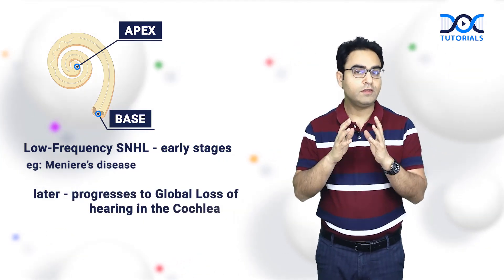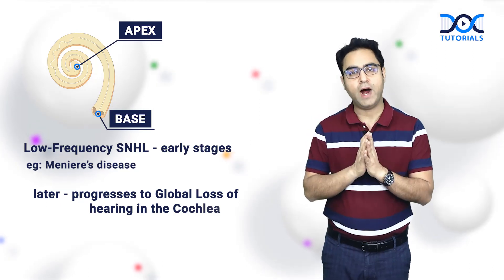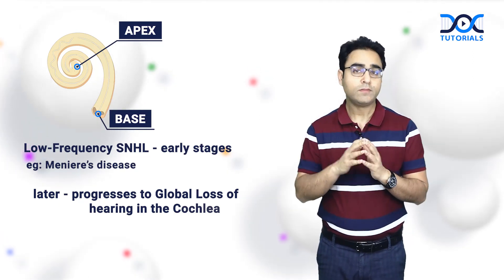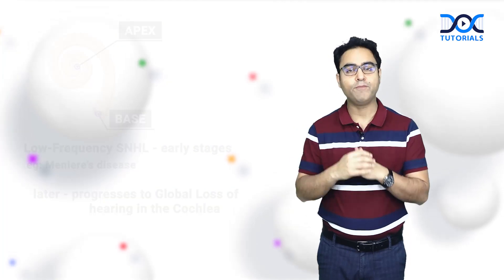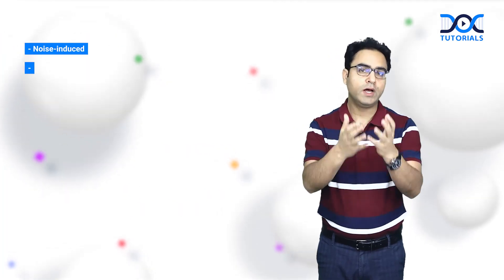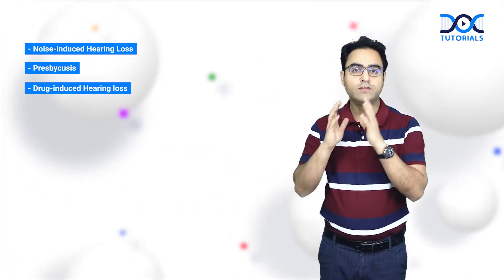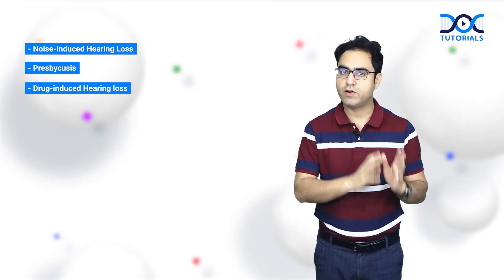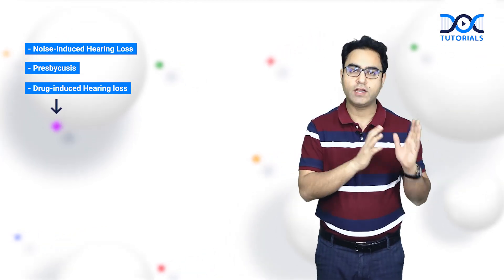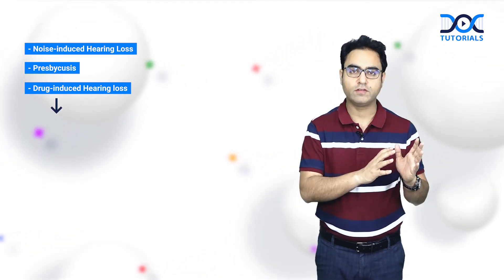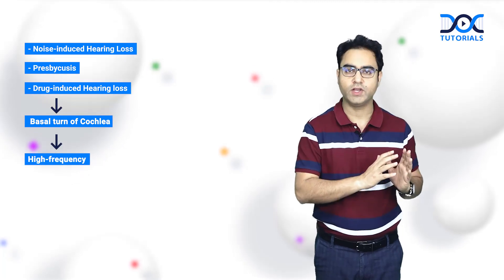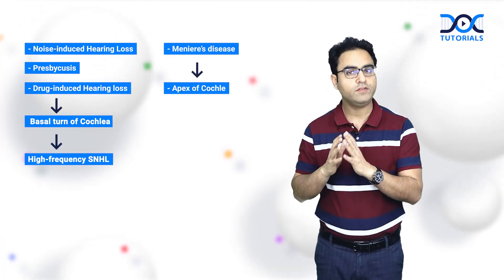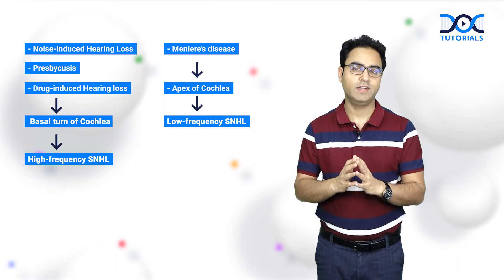This was a very interesting part of the story of the cochlea. In the app videos, you will learn the story further. But the key points to remember: noise, age, and drugs damage the basal turn of the cochlea first — therefore, high frequency SNHL. And Menière's disease damages the apex of the cochlea first — therefore, low frequency SNHL.